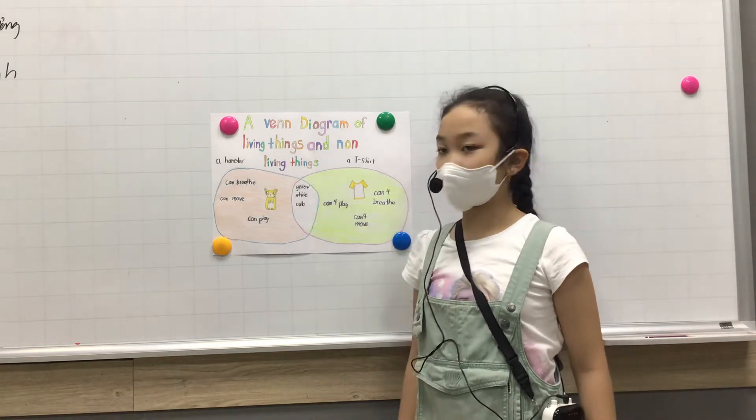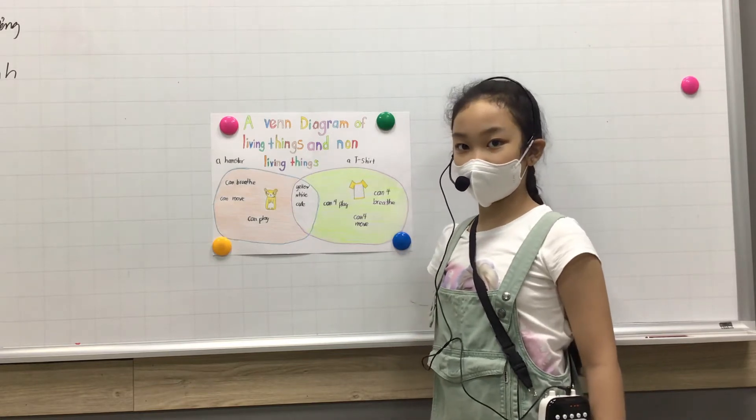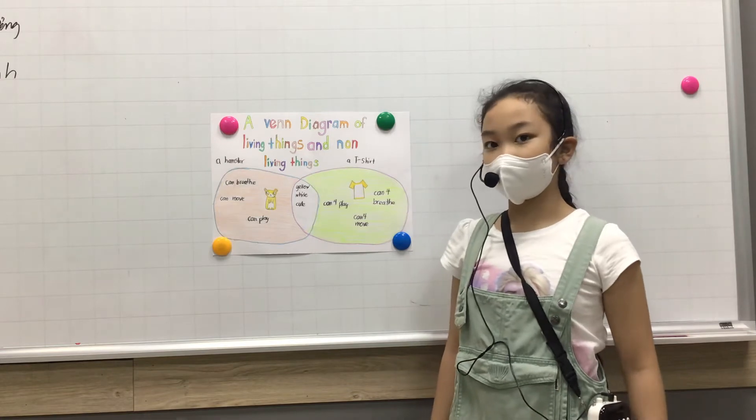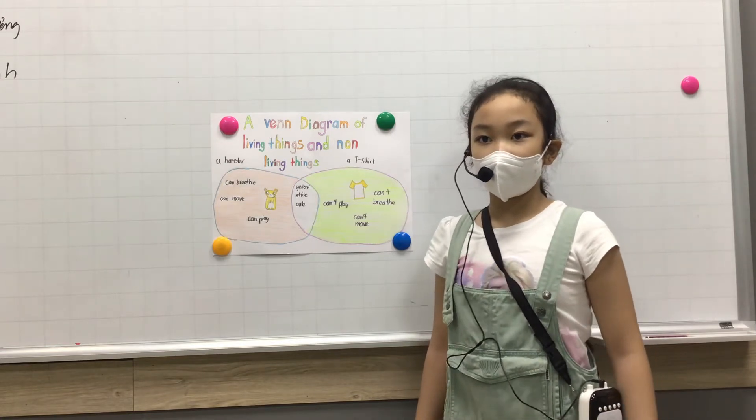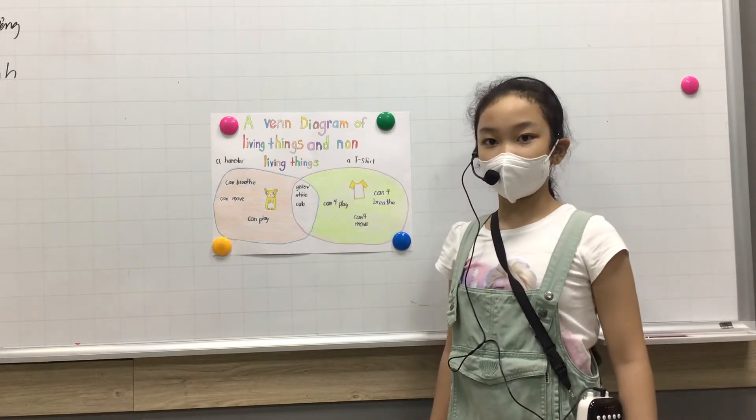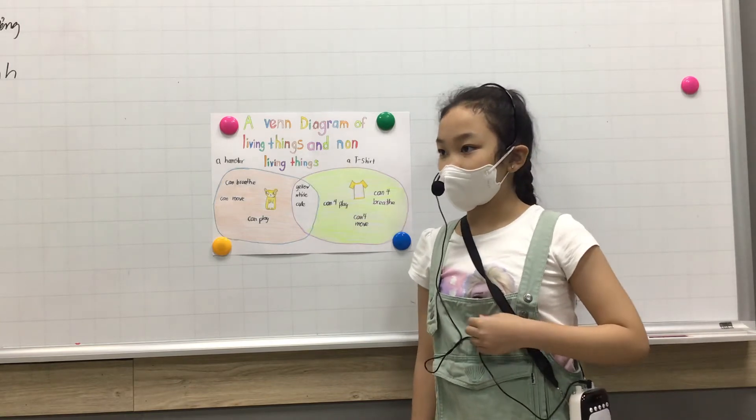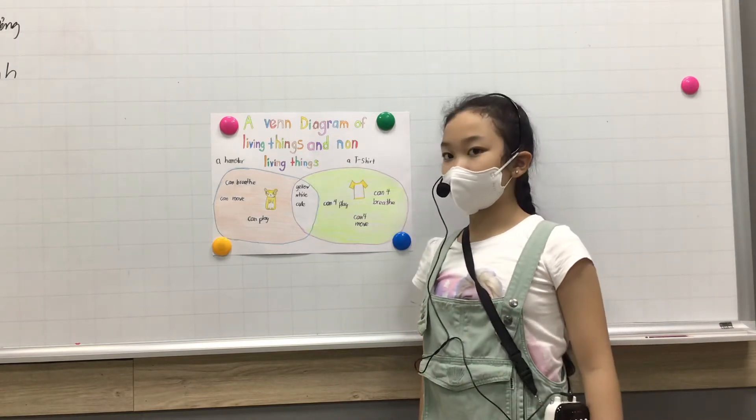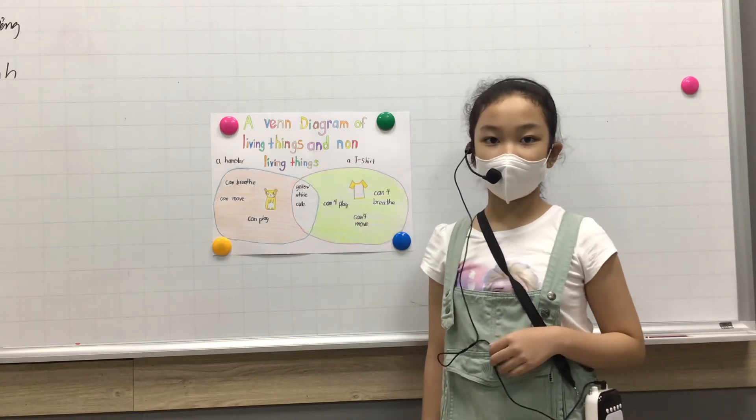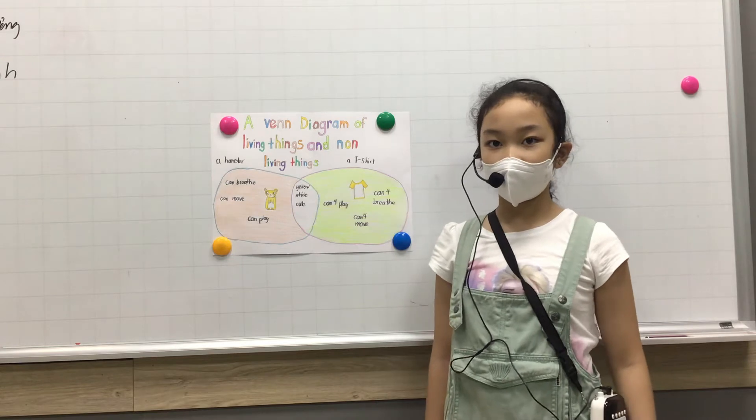The hamster can breathe in oxygen and breathe out carbon dioxide. Then it begins with the small rats. It eats and grows to become a big hamster.